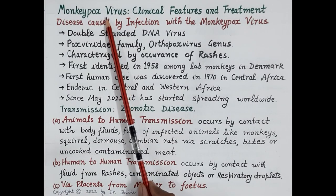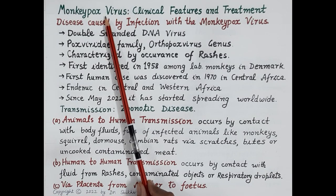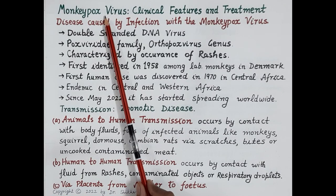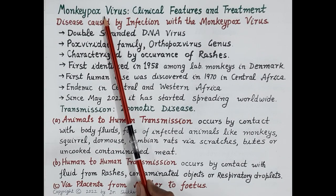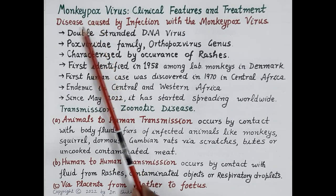Hello students. In today's video we are going to discuss monkeypox virus. The chapter of coronavirus is not yet over and we already have another viral infection — monkeypox virus — spreading worldwide. Monkeypox virus infection has been reported from around 75 countries including Europe, United States, UK, Canada, Portugal, and a few cases have been reported from India too. Since May 22nd, cases of monkeypox are increasing — around 16,000 cases and five deaths have already been reported, and the number is increasing day by day.